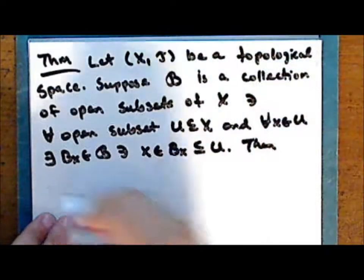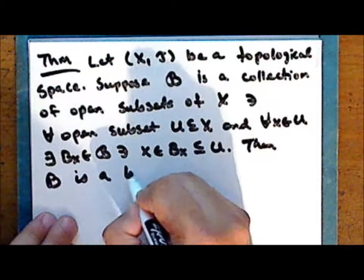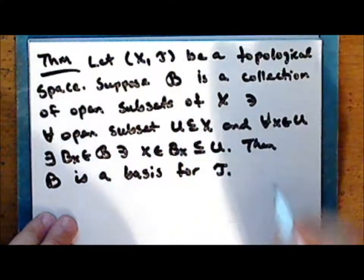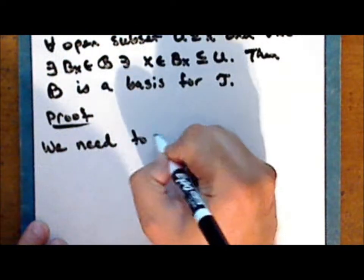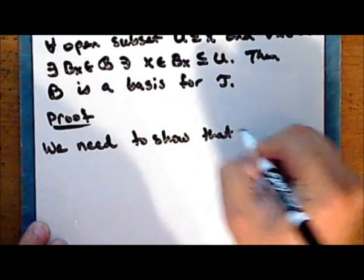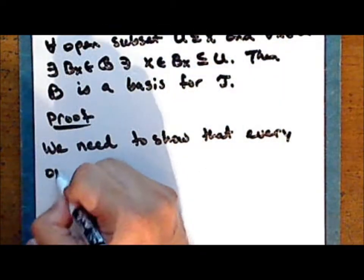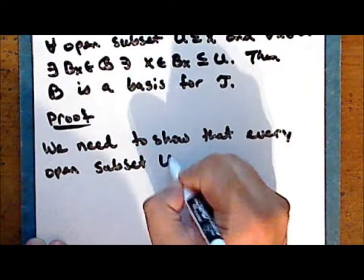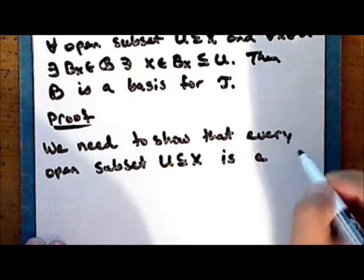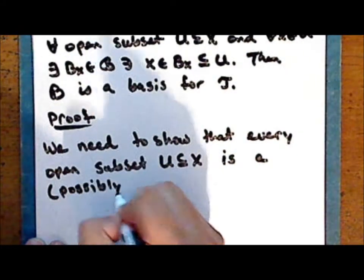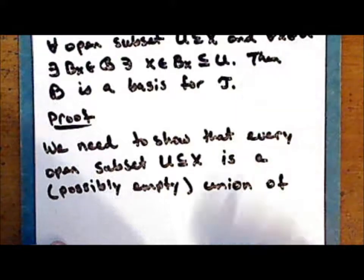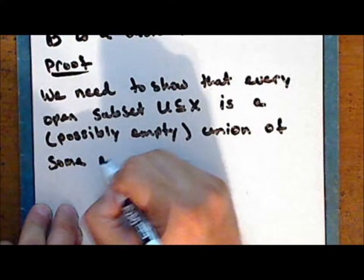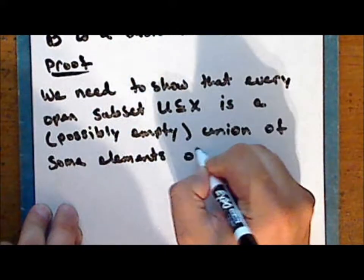Then the collection script B is a basis for the given topology τ. For the proof, we need to show that every open subset U of X is a — possibly empty — union of some elements of the collection script B.